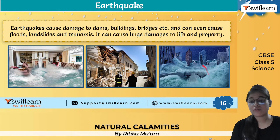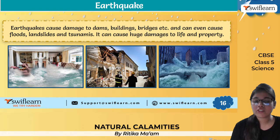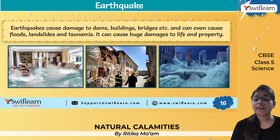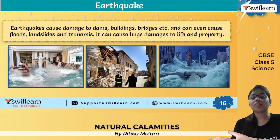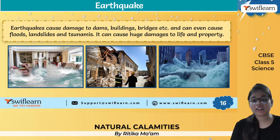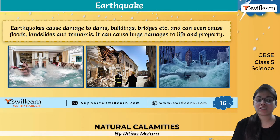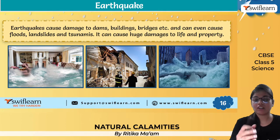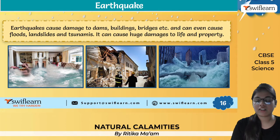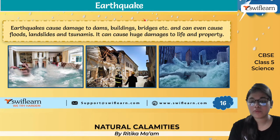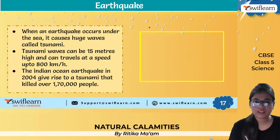These are some pictures taken from earthquakes — they show the damage to buildings, dams, and bridges. Earthquakes can further trigger other calamities such as floods, landslides, and tsunamis. Whenever an earthquake occurs, it can cause huge damage to life and property.